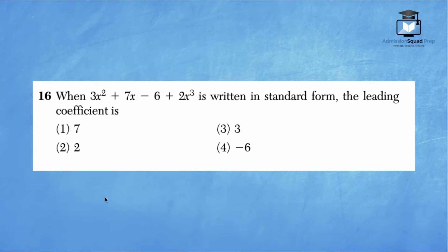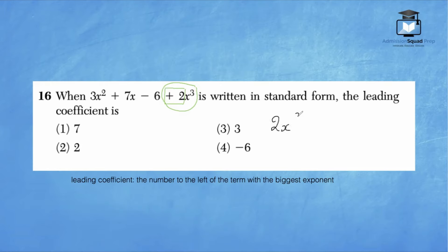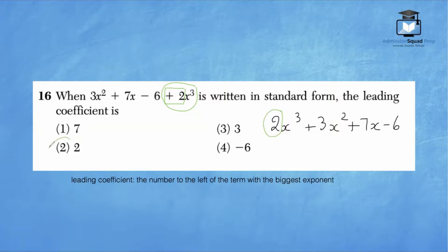Number 16: when 3x² plus 7x minus 6 plus 2x³ is written in standard form, the leading coefficient is. The leading coefficient is the number to the left of the term with the biggest exponent. The term with the biggest exponent is 2x³. So the leading coefficient is 2. Written in standard form: 2x³ plus 3x² plus 7x minus 6.